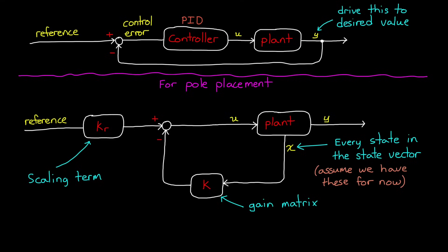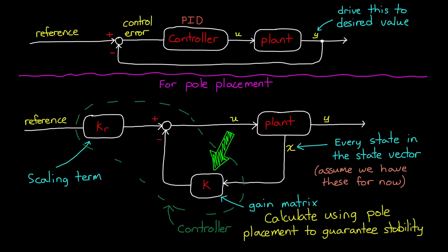In this feedback structure, this whole section is the controller. And pole placement is a method by which we can calculate the proper gain matrix to guarantee system stability. And the scaling term on the reference is used to ensure that steady state error performance is acceptable. I'll cover both of these in this video.